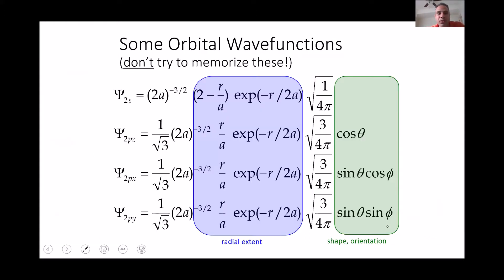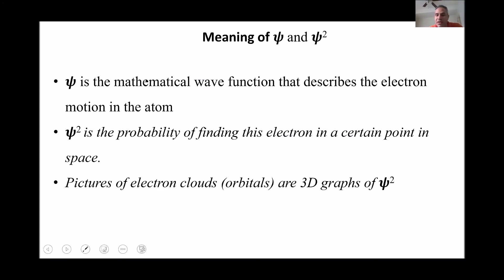These solutions are complex functions in nature, but you don't need to memorize them — you just need to know that each solution corresponds to certain values of n, l, and mₗ quantum numbers, defining the available spaces for the electron in the atom. ψ is the mathematical wave function describing electron motion, and ψ² is the probability of finding the electron at any point in space. The pictures of electron clouds, or orbitals, are simply 3D graphs of ψ².